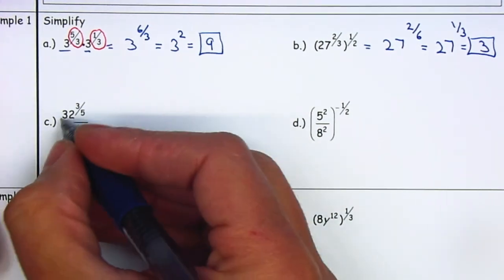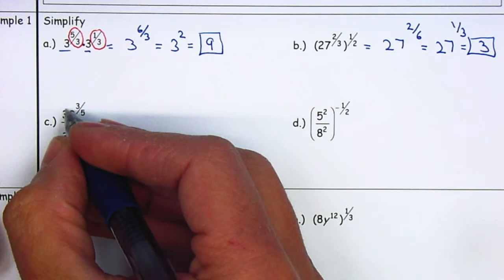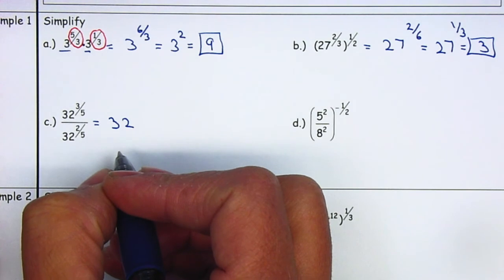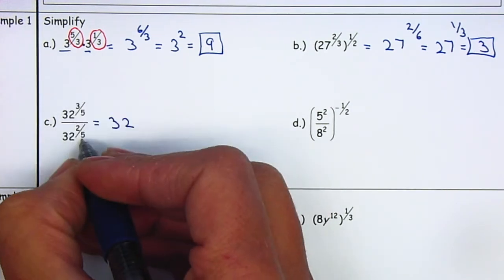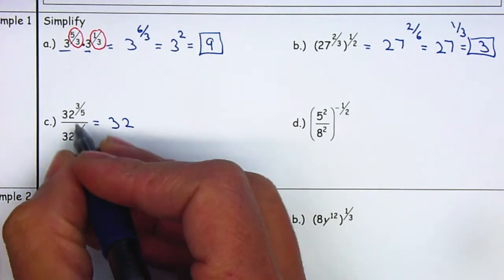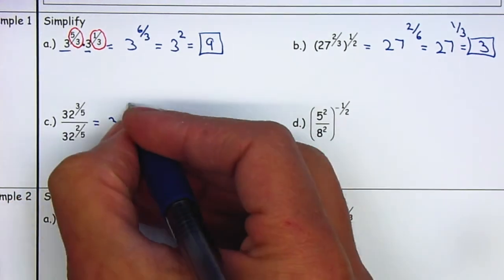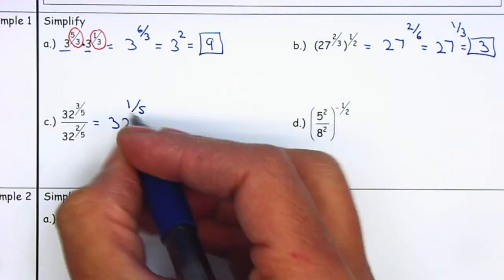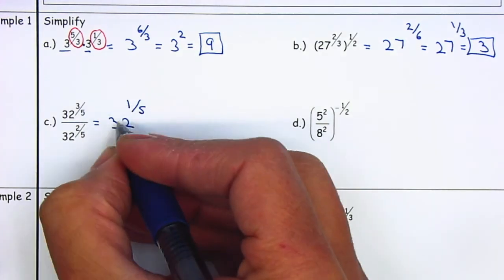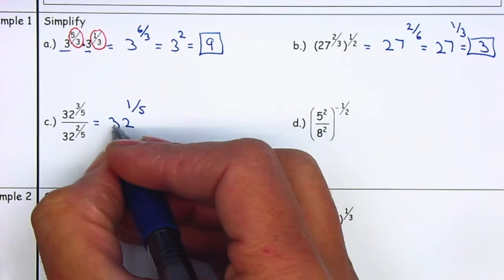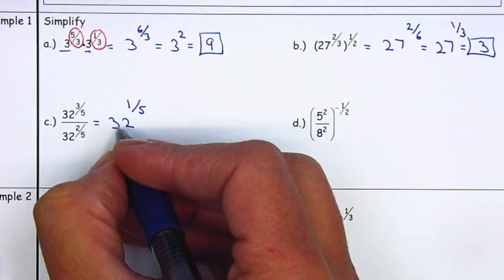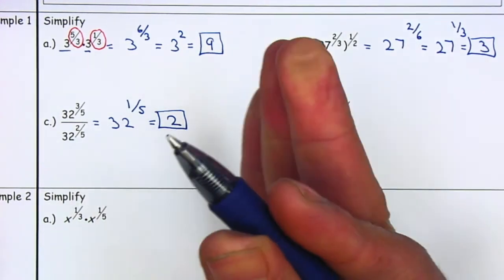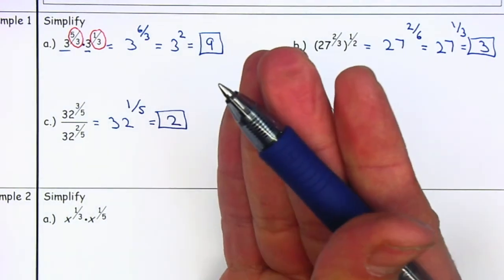For letter C, when they're dividing, if they have the same base we can go ahead and subtract the exponents. So we're using the quotient of powers property. 3/5 minus 2/5 — when we subtract, we need to have the same denominator; in this case they already do. So this will be 1: 3 minus 2 is 1 over 5. I want you guys to think of 32 to the 1/5 as the fifth root of 32 — I'm looking for a number that multiplied by itself five times gives me 32, which is 2: 2×2=4, ×2=8, ×2=16, ×2=32.